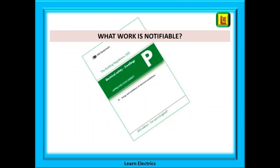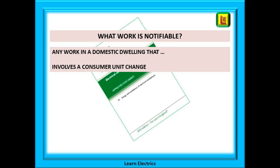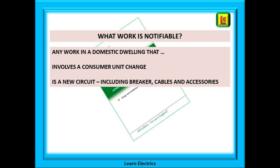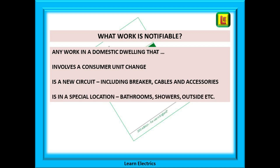What work is notifiable? Any work in a dwelling — a domestic property — that involves changing a consumer unit; any work where you install a new circuit, providing a new circuit breaker, new cables and new accessories (for example, installing a new electric cooker circuit where one did not exist before); and any work in a special location — areas of increased risk of electric shock — including bathrooms, rooms with showers, swimming pools, and outdoor work such as installing a new circuit for electric gates.